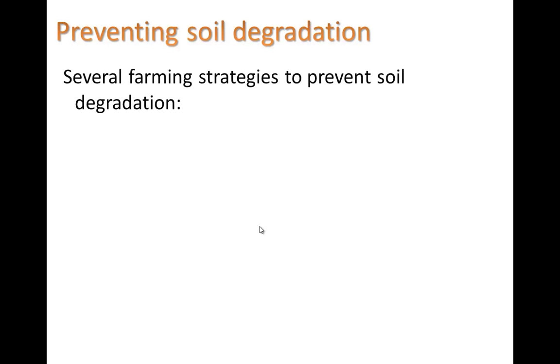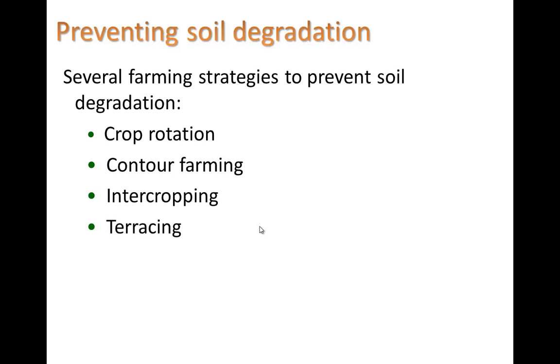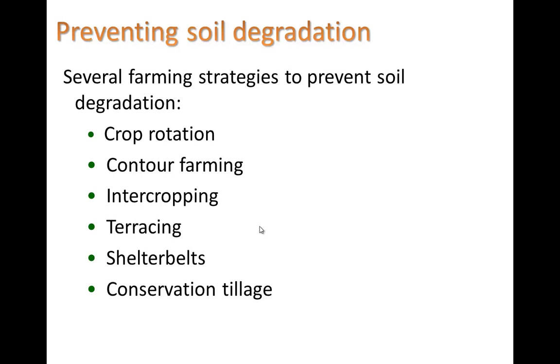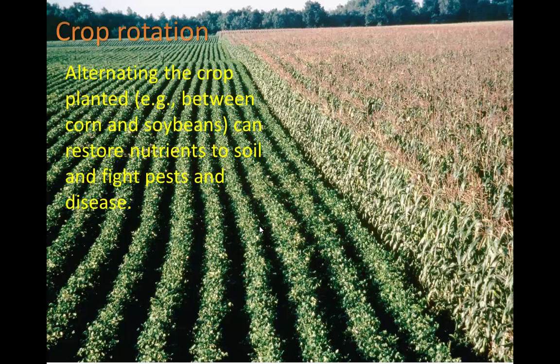So how do we prevent soil degradation? There are many strategies: crop rotation, contour farming, intercropping, terracing, shelter belts, and conservation tillage. Crop rotation means alternating the crop planted — for example, between corn and soybeans. One season you might grow corn, the next season soybeans, to help restore nitrogen into the soil. This can restore nutrients and help fight pests and disease, because a pest that likes corn may go away or die when you switch to soybeans the following year.